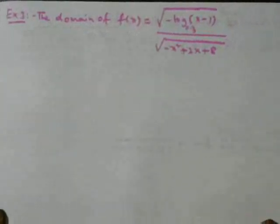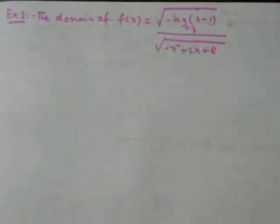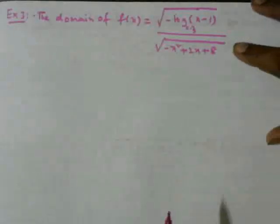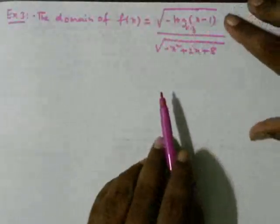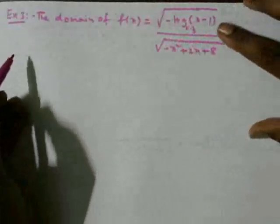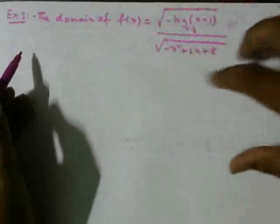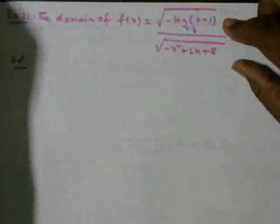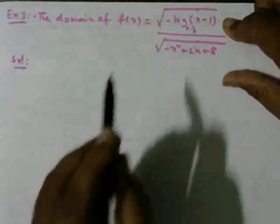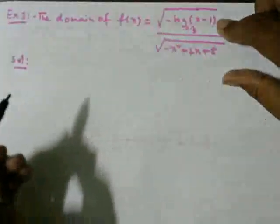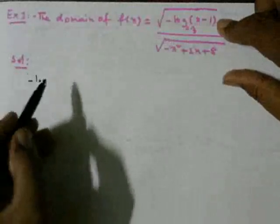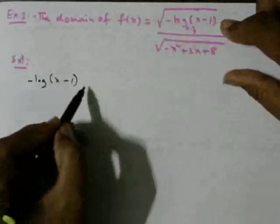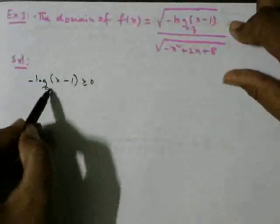Now we move to competitive-level questions where multiple concepts must be applied in the same problem. For the next question, to find the domain, whatever is under the square root must be positive. So logarithm base 0.3 of (x-1) ≥ 0. Also the base matters: the base 0.3 is less than 1, so logarithm is a decreasing function.